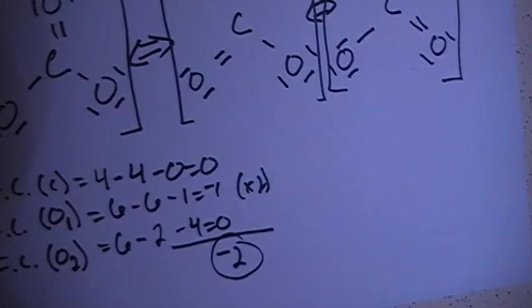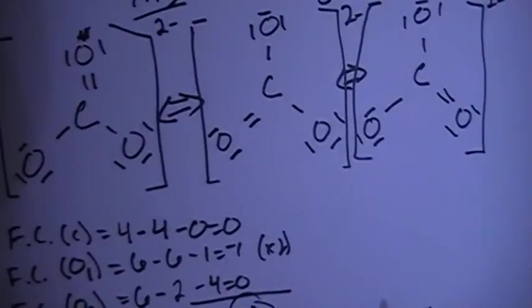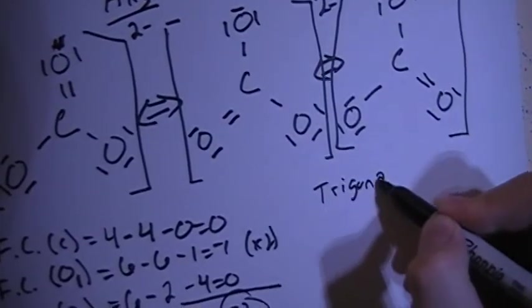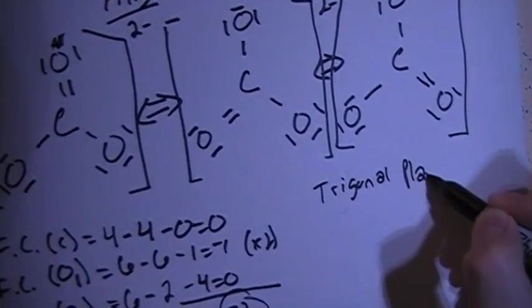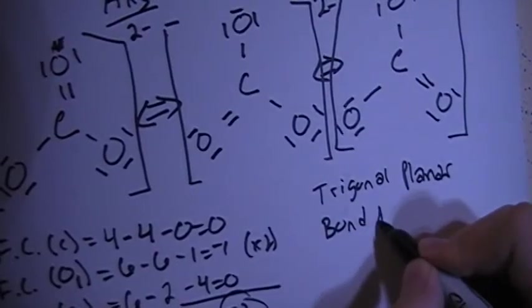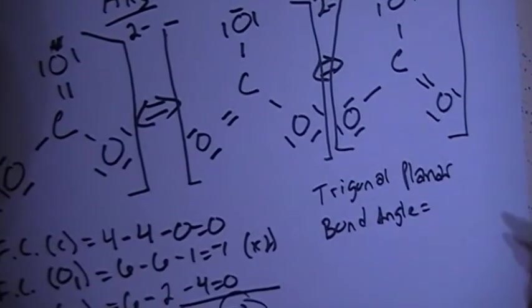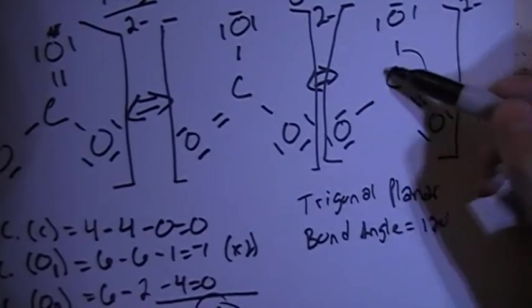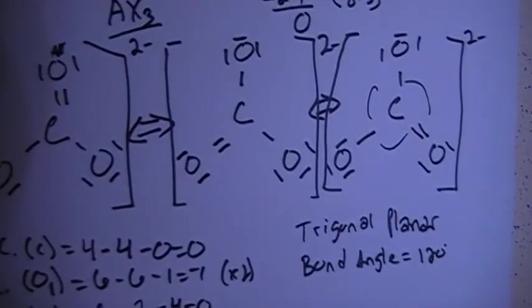Now we can talk about the shape. Because it's AX3, one central atom with three surrounding atoms, that's going to be a trigonal planar shape. The bond angle for this molecule is going to be 120 degrees in between here, here, and here.